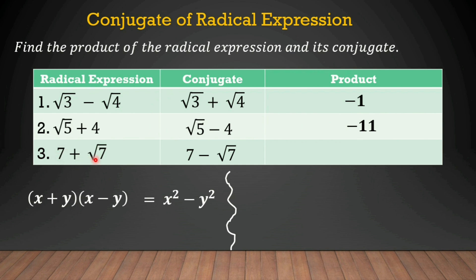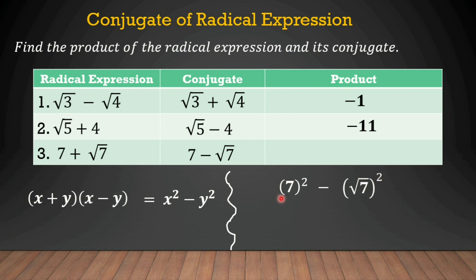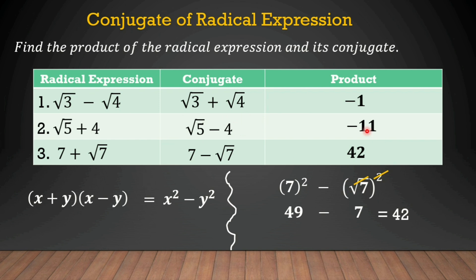Number 3 example: 7 plus the square root of 7 times 7 minus the square root of 7. We take the square of the first term: 7 squared. Then positive times negative equals negative. Then the square root of 7 squared. Simplifying: 7 squared equals 49. We cancel the exponent and the index, leaving 7. So 49 minus 7 equals 42. That is the product. That's how we find the conjugate and product of radical expressions.